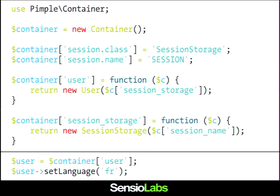Above the line, it is just about configuring the dependency injection container — describing the relationships between all objects. Above the line, nothing is created: there is no user object, no session storage. The very first time I ask for a user, the container actually creates it. It knows that to create a user it needs a session storage, so it creates the session storage first, gets the session name, and then the user object can be created. I've abstracted how to create all the objects in my application.